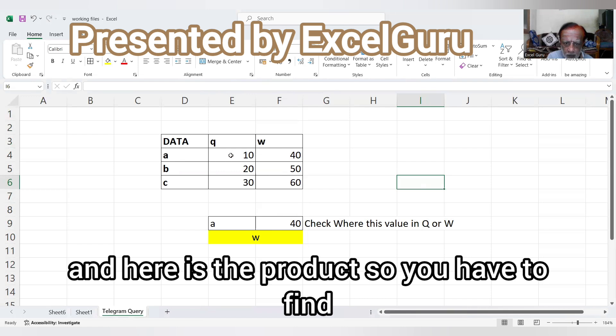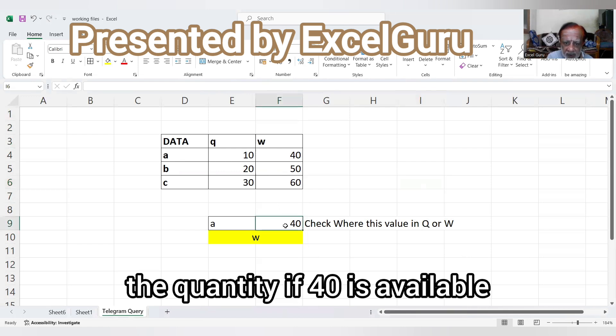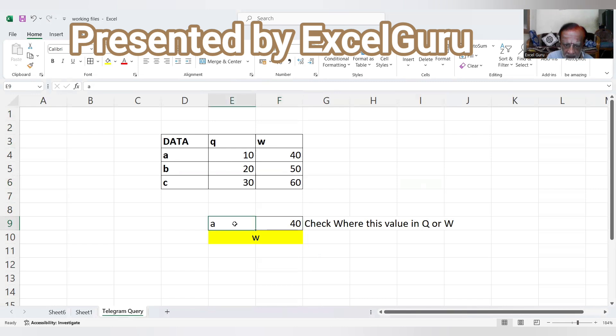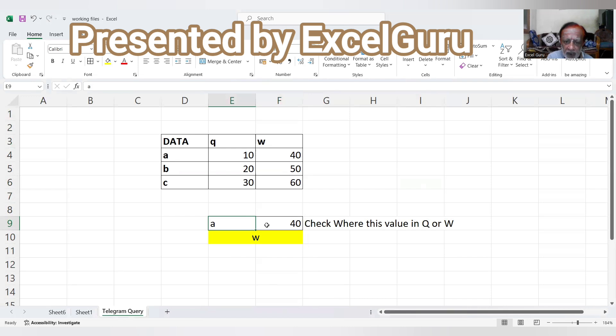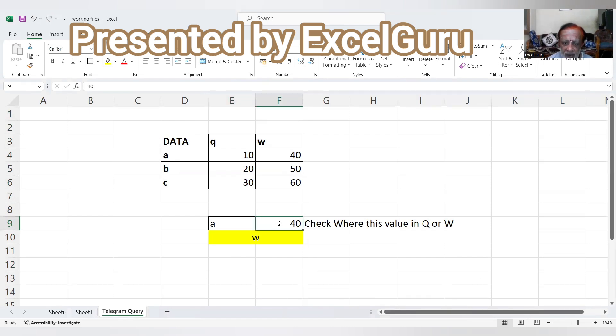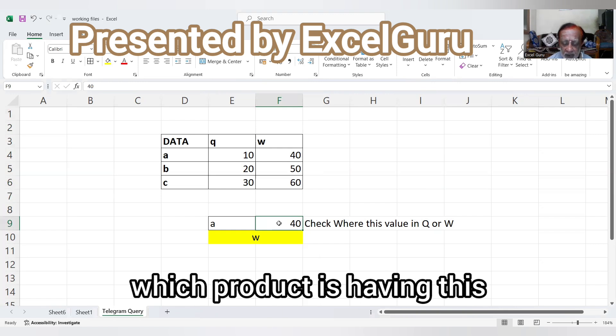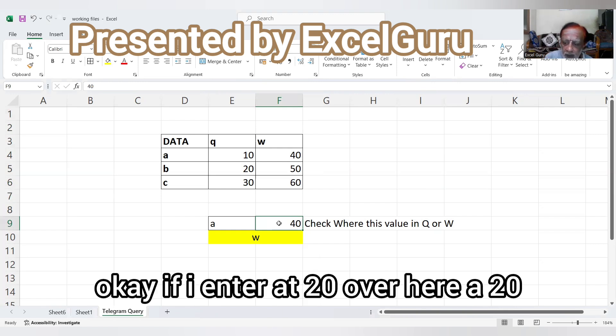So here is the product and state, or city. Assume this is the city and this is the product. You have to find the quantity. If 40 is available, this is the city, and here is the quantity. We have to find which product has this quantity.